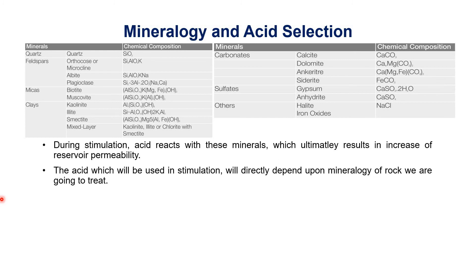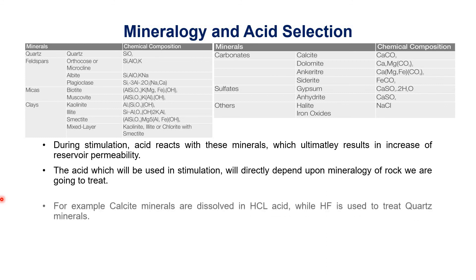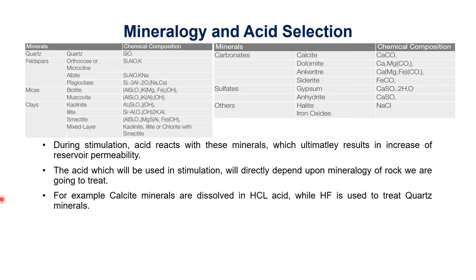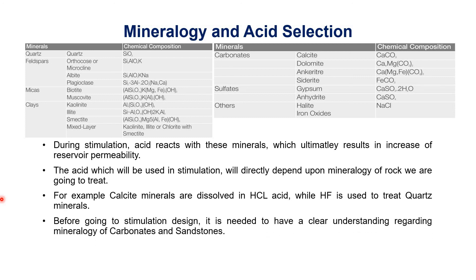The acid used in stimulation will directly depend on the mineralogy of the rock being treated. For example, calcite minerals are dissolved by HCl acid, while HF is used to treat quartz minerals. Since calcite forms carbonate rocks and quartz forms sandstone, we use HCl-based acid when treating carbonates, and HF-based acid systems when treating sandstone. Therefore, before designing stimulation it is essential to have a clear understanding of the mineralogy of carbonates and sandstones.